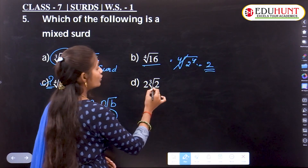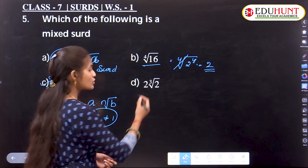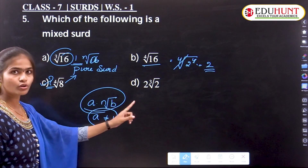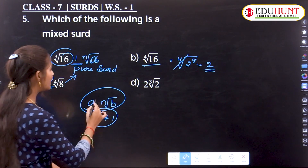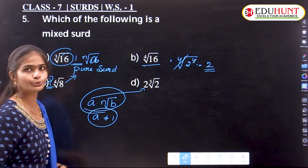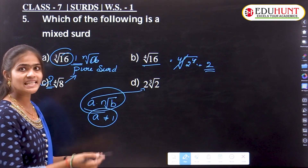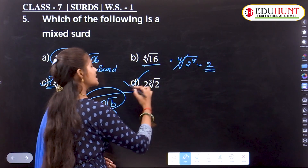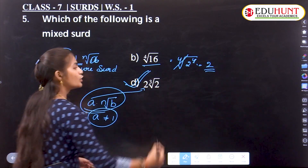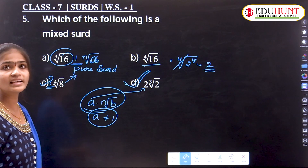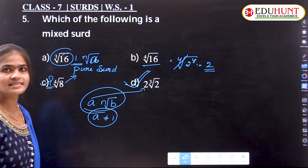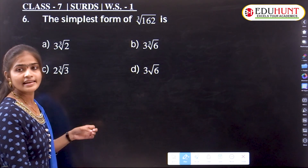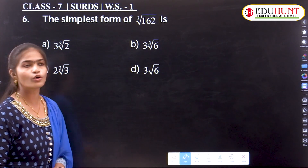Finally, the last option is 2·∛2. This is in the form a·ⁿ√b, where a equals 2, which means a is not equal to 1. Therefore, 2·∛2 is a mixed surd. That is the correct answer.